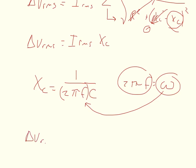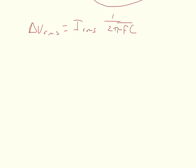We'll get the delta V RMS is equal to the RMS current times 1 over 2 pi times the frequency times the capacitance. And then we could solve for the current by multiplying this onto both sides. So we'll get the delta V RMS times 2 pi times the frequency times the capacitance is equal to I RMS.